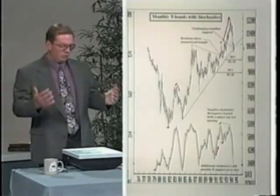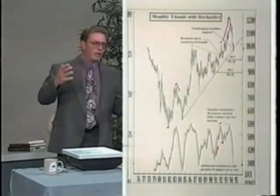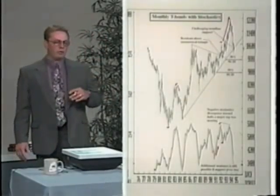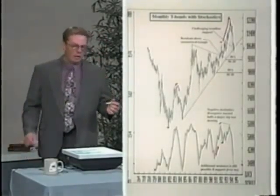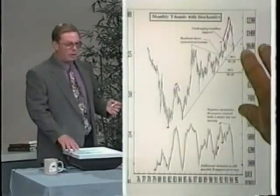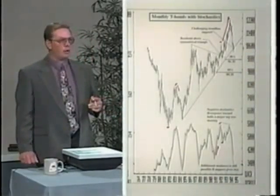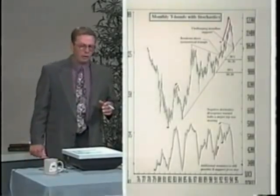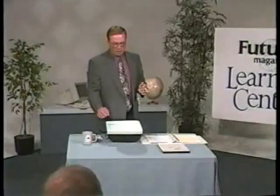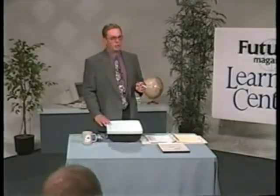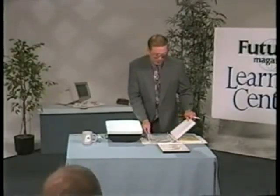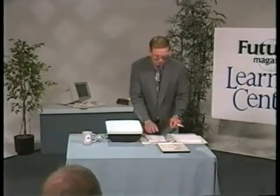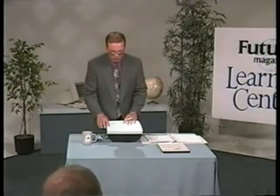This is the case for any commodity — whether it's corn, cotton, or T-bonds — when the market has been in an uptrend and is challenging trend line support. Once that trend line is broken, you have confirmed a major top is in place and a downtrend is beginning. With that long-term bias in mind, I now want to move to the next degree closer to the market: the weekly degree.